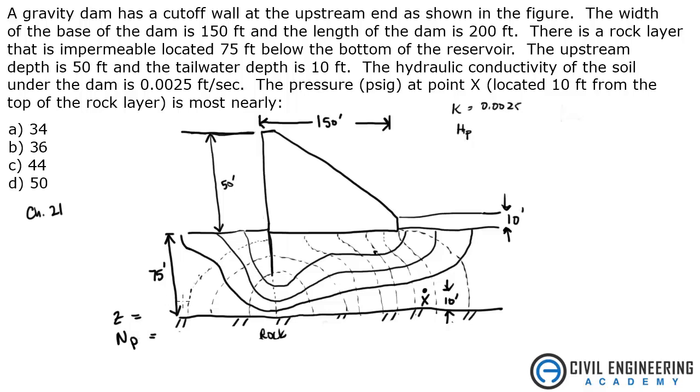We just basically add these individual sections here. Each one of these lines is a drop. So this is 1, 2, 3, 4, 5, 6, 7, 8, 9, 10, 11, 12, 13 drops. The other thing we could add up is number of flow lines. So we've got 1, 2, 3, 4. We've got 4 flow lines, 13 drops.